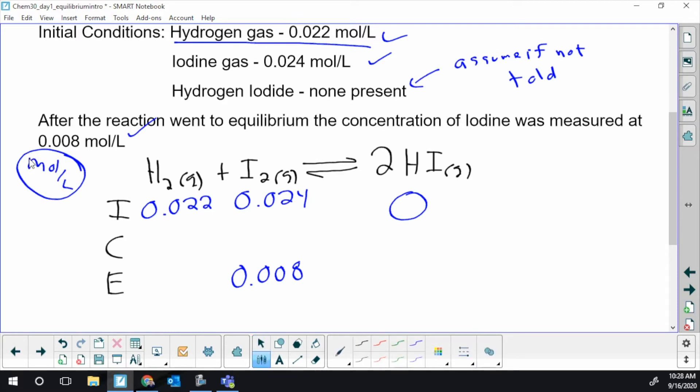Now I have to do some analysis. If you have two values in a column, you can complete the whole ICE table, and that's what we have with our iodine - we know the beginning and the end. I can figure out this C. Stoichiometry lets me figure out all the other C's, and then I can fill out all the other columns. So this becomes 24 minus something is 8 - that's 16 millimoles or 0.016.